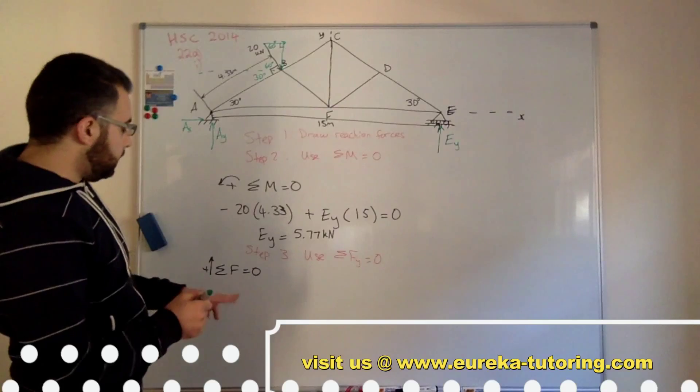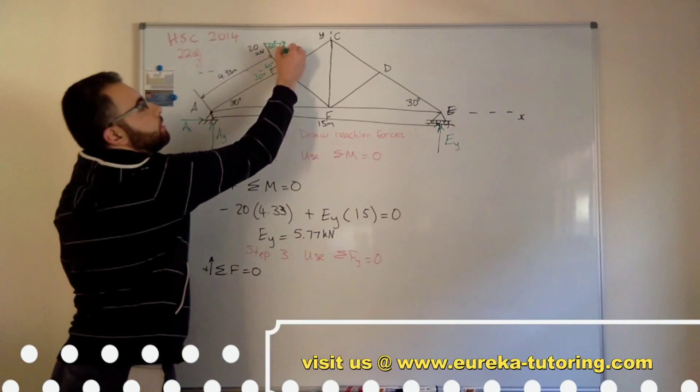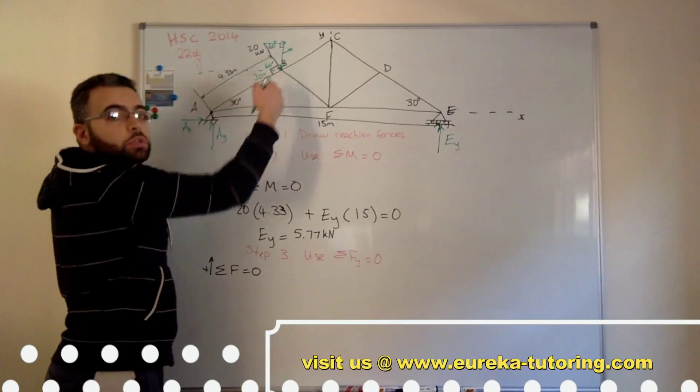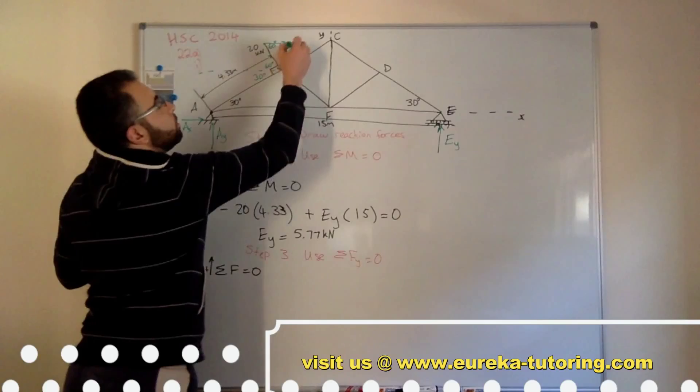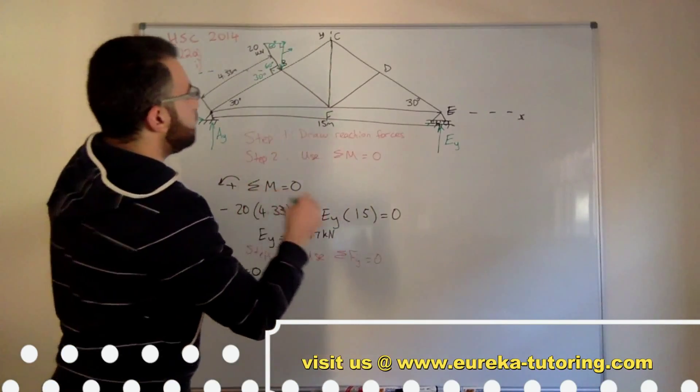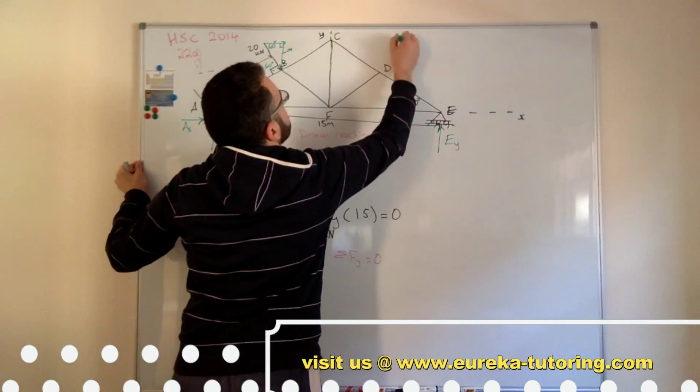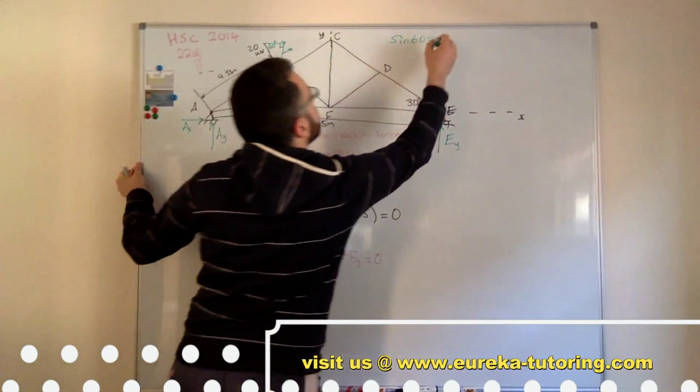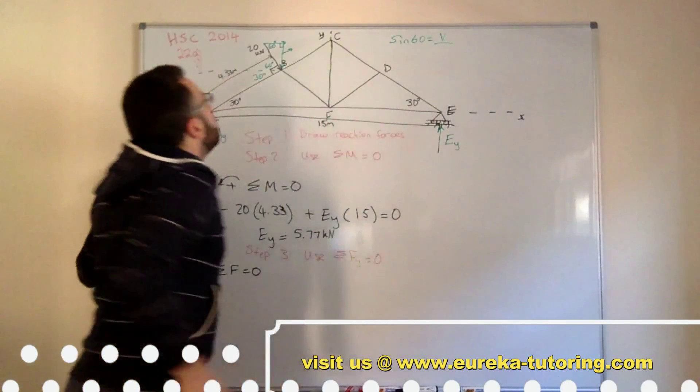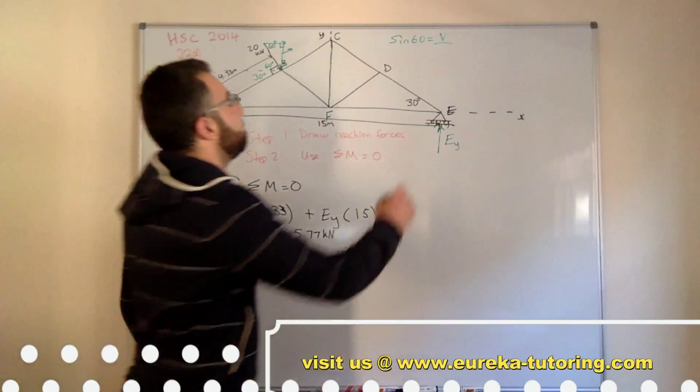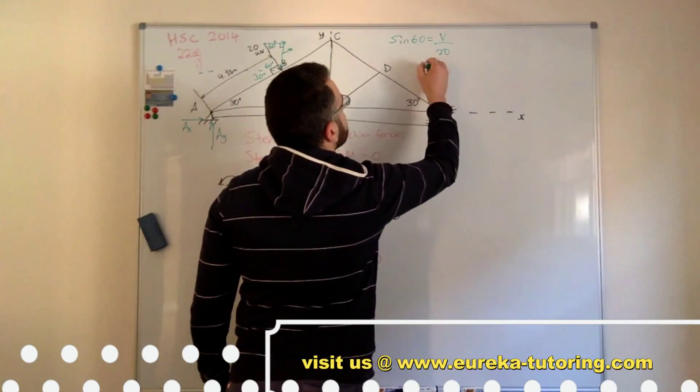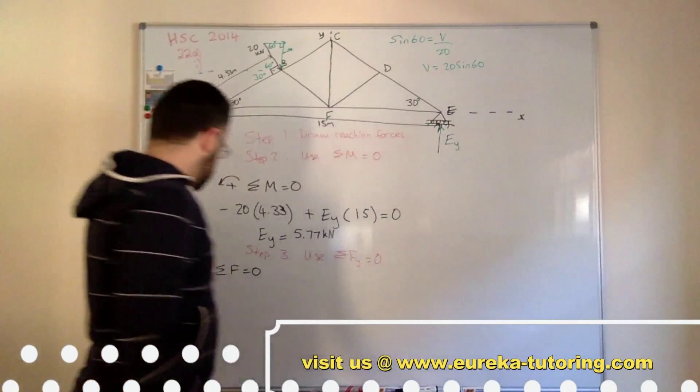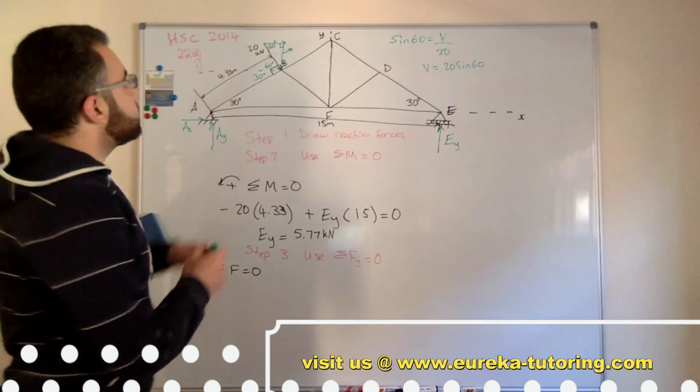So, when doing my sum of forces in the vertical direction, I need to know what this is. So now, this is opposite and this is hypotenuse, so we're using the sine trig ratio. So, I'll do this here. So, sine 60, the angle, equals opposite, which is, let's call it V, over the hypotenuse, which is 20. So vertical equals 20 sine 60. And that's going down.